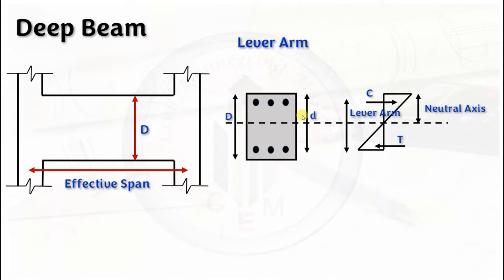You should understand the difference between the overall depth of the beam and the effective depth of the beam. Effective depth can be calculated using: effective depth equals overall depth minus clear cover minus diameter divided by 2. If you want to calculate the overall depth, you add clear cover plus diameter divided by 2 plus the effective depth.